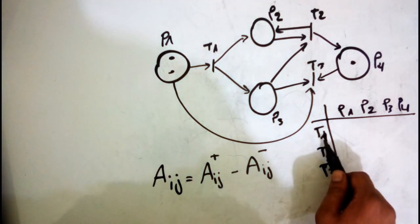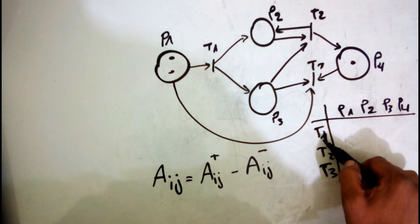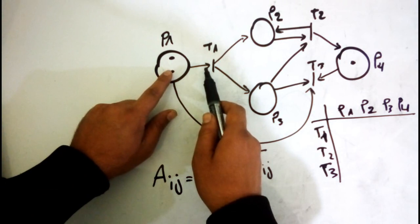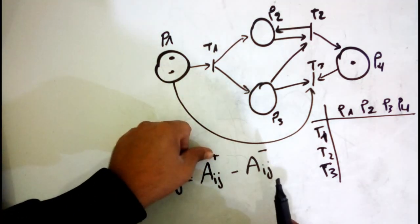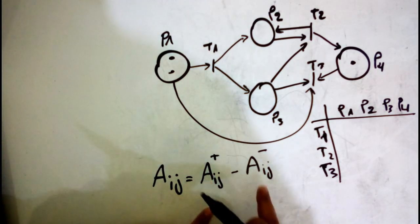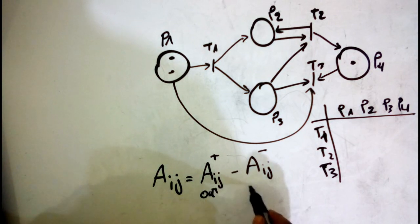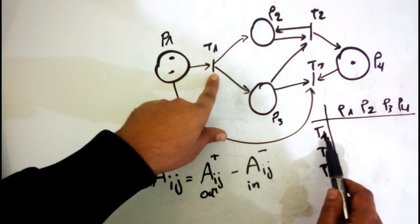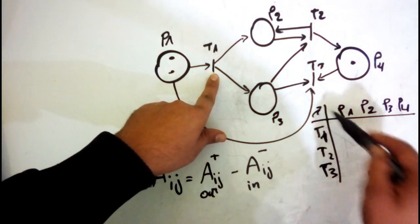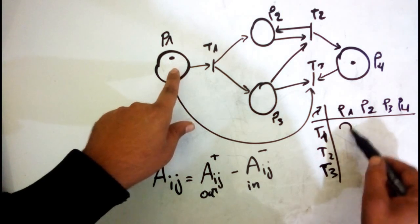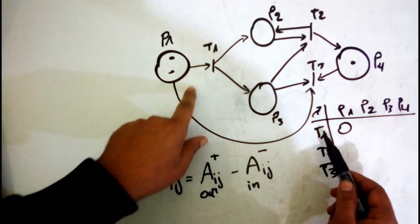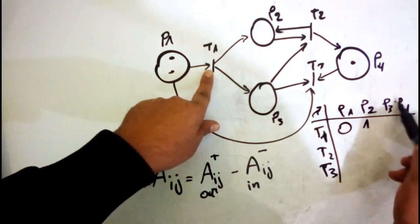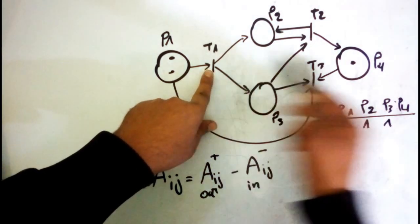The output matrix represents arcs going from a transition to a place. For t1: the output from t1 to p1 is 0 because there is no arc there, from t1 to p2 the weight is 1, from t1 to p3 is 1, and from t1 to p4 is 0.